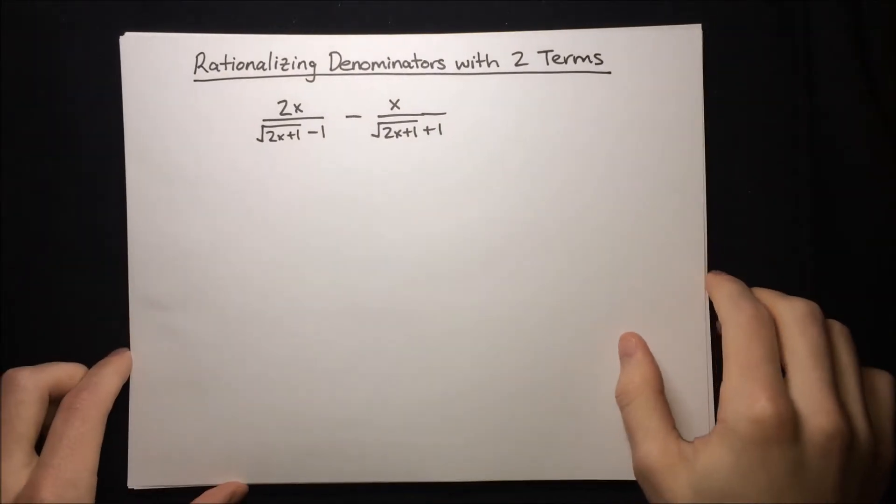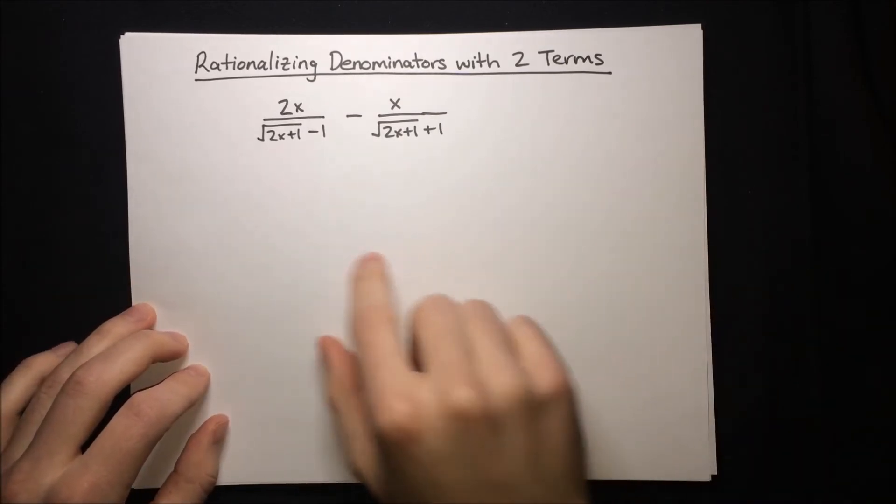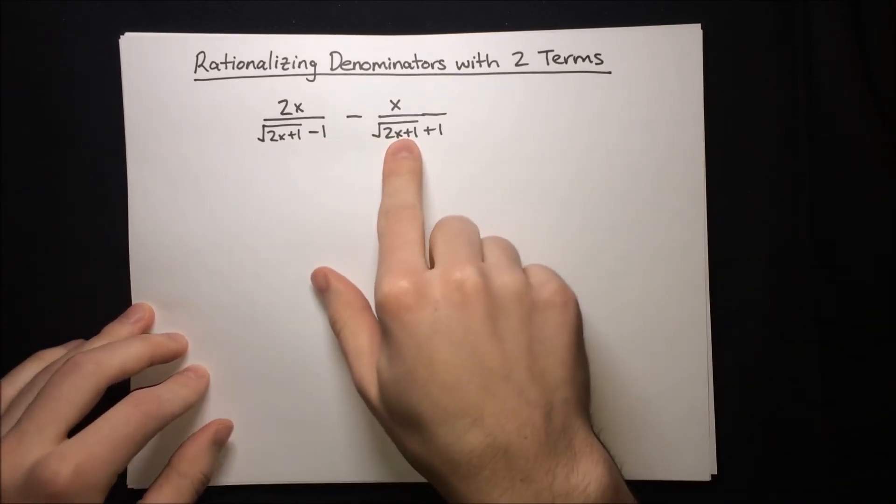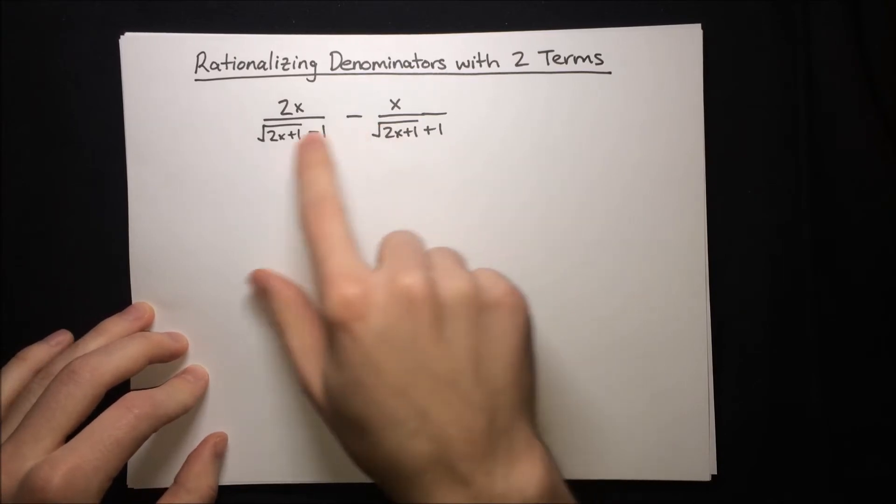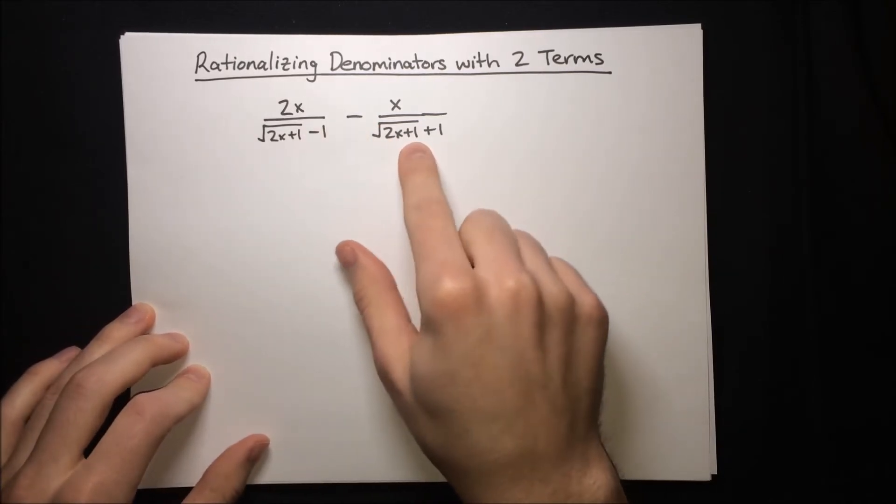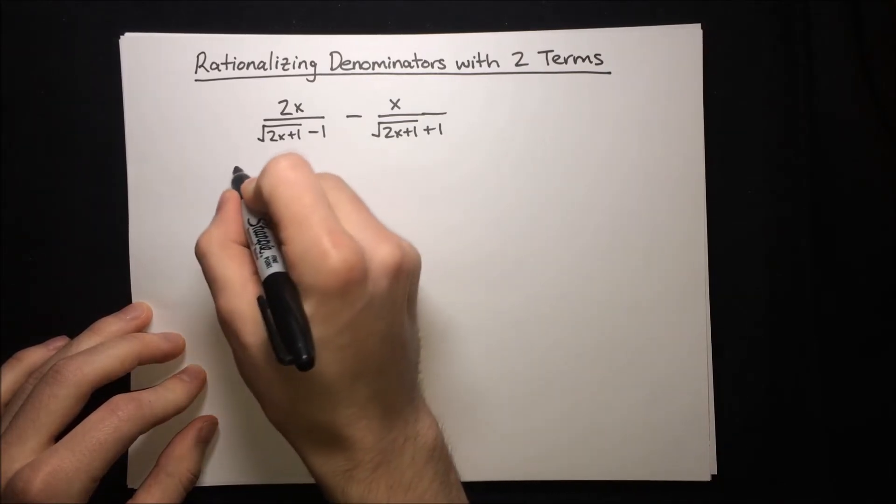Here's one last example of rationalizing these denominators. We're subtracting these two fractions, so before we can do that, we need to rationalize each denominator. For the first fraction, let's rewrite that again.